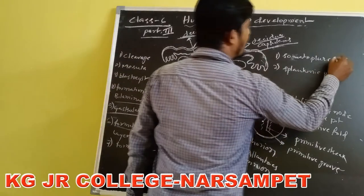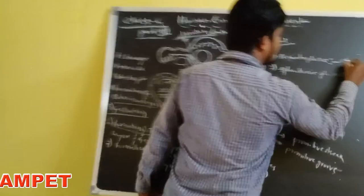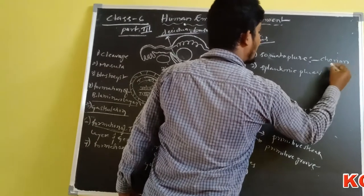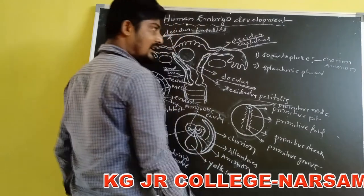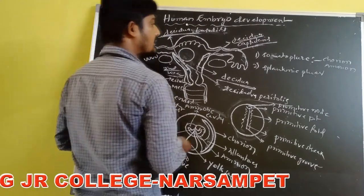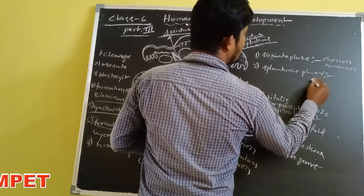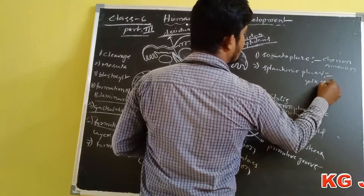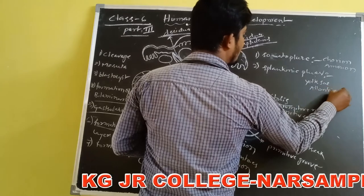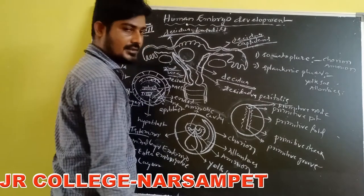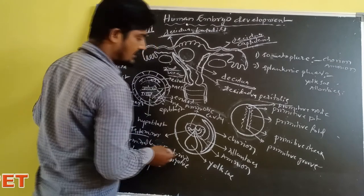The somatopleure produces two extra-embryonic membranes: the chorion and the amnion — the internal and outer extra-embryonic membranes. The splanchnopleure gives us the yolk sac and allantois. So these are the four extra-embryonic membranes.